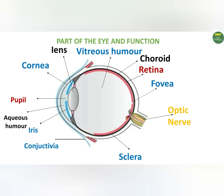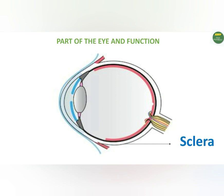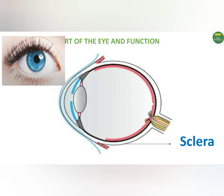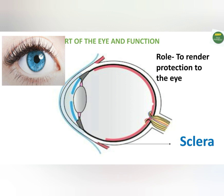Now that we've seen the basic components of the eye, let's proceed to their functions. The first part we talk about is the sclera. It's the outermost layer of the eye, consisting of tough muscular layers, and it forms the white parts of the eye. The role of the sclera is to render protection to the eye. A quick way to remember: external structures that house internal structures are mainly for protection.